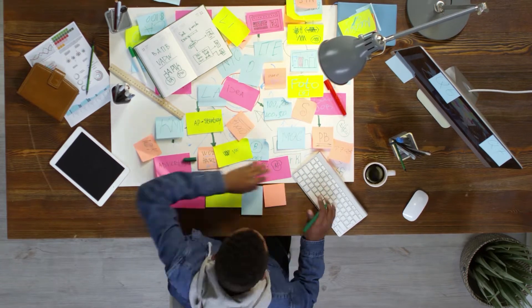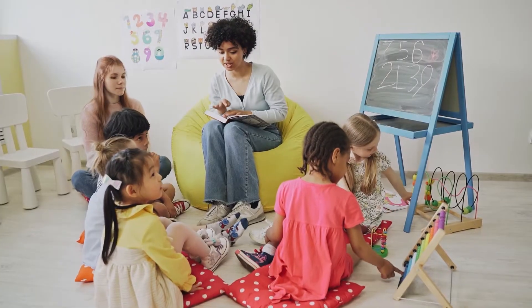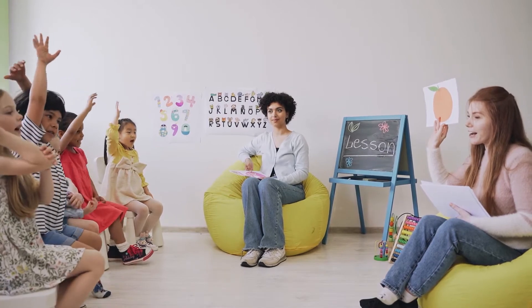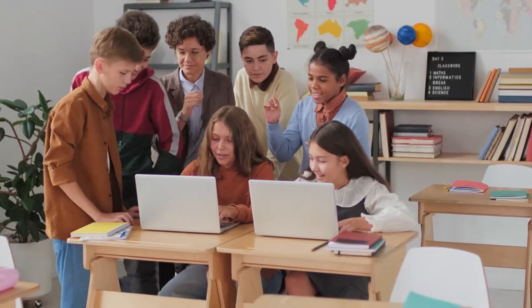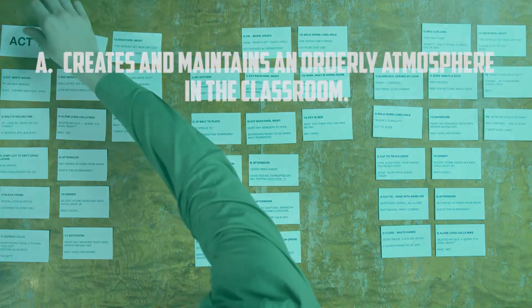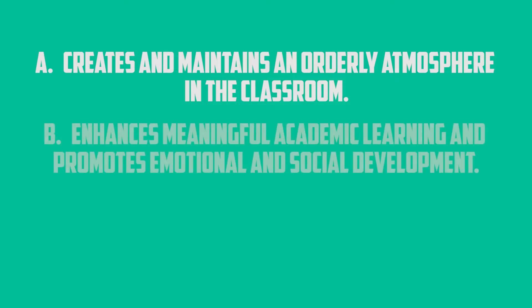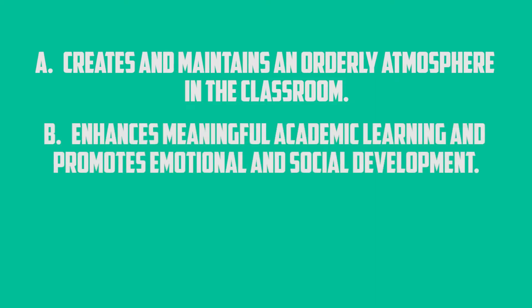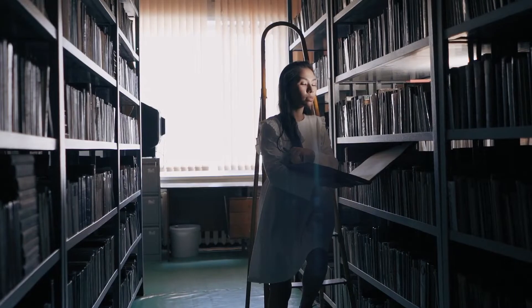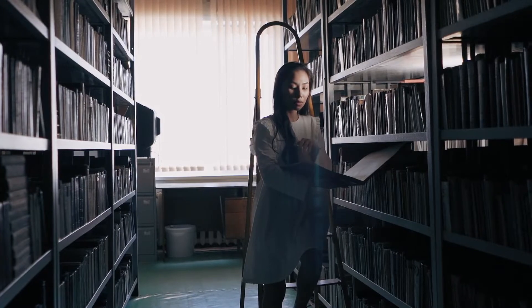One of the biggest challenges noted by most educators around the world is managing the classroom. However, effective classroom management techniques allow teachers to maximize the behaviors that support and promote learning, while minimizing the behaviors that hinder learning for both individual students and groups of students. Thus, effective classroom management has all the following characteristics: A) creates and maintains an orderly atmosphere in the classroom; B) enhances meaningful academic learning and promotes emotional and social development; C) involves time spent engaged in academic activities while decreasing negative behaviors. In other words, the objective of classroom management is order for the sake of learning, not order for order's sake.